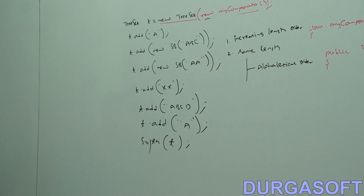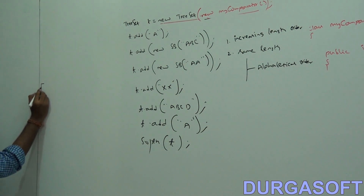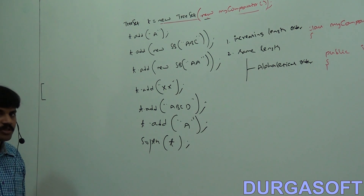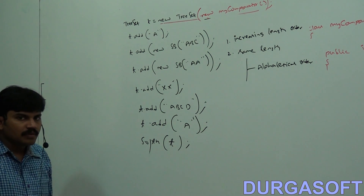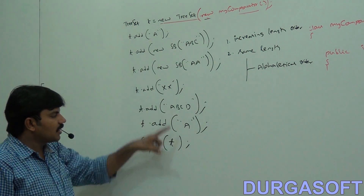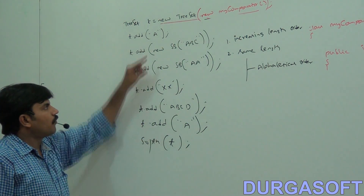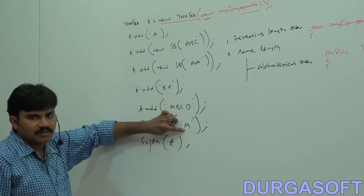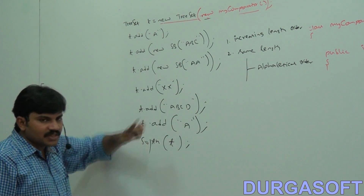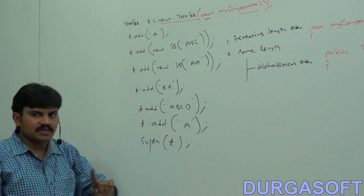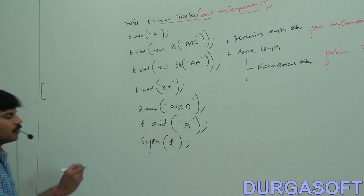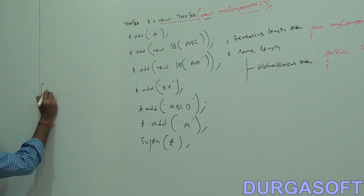Can you tell what the expected output is? In increasing length order, first which one? Length one — how many things are there? Here one, here one. But if both are the same length, consider alphabetical order. So A is a duplicate and will be removed; only one A will be added.